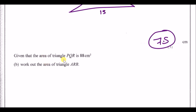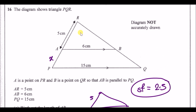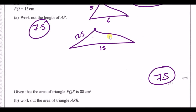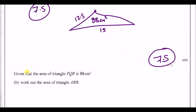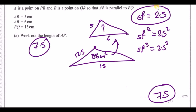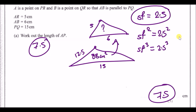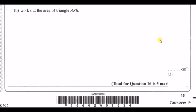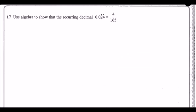The area of triangle PQR is 88 cm². To find the area of the small triangle ARB, don't divide by the length scale factor — use the area scale factor, which is the scale factor squared: 2.5² = 6.25. So divide 88 by 6.25. The area of ARB is 14.08 cm².